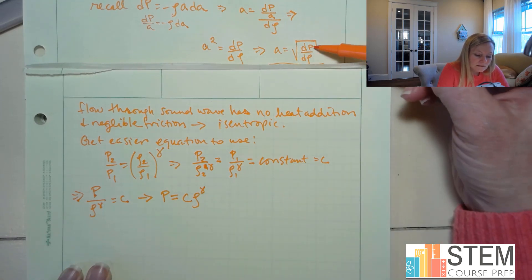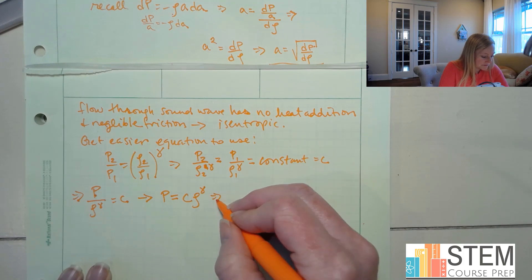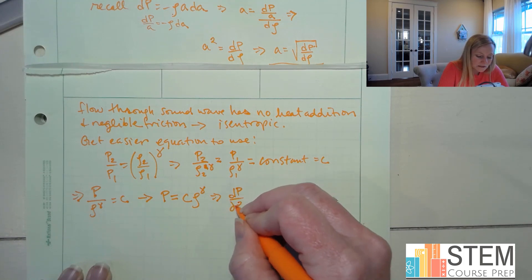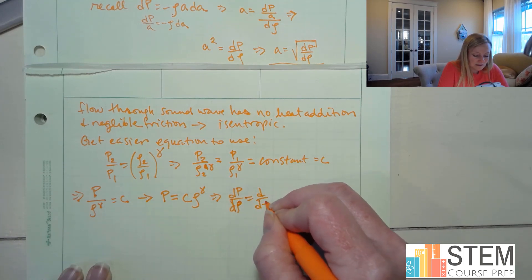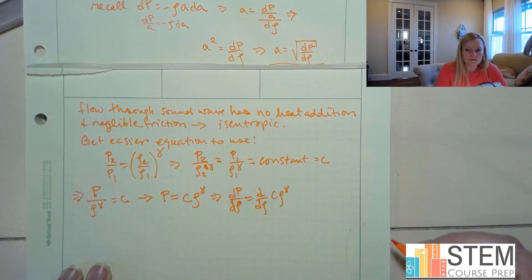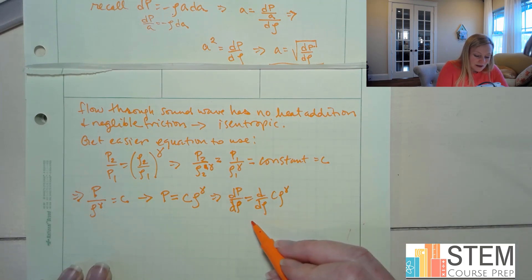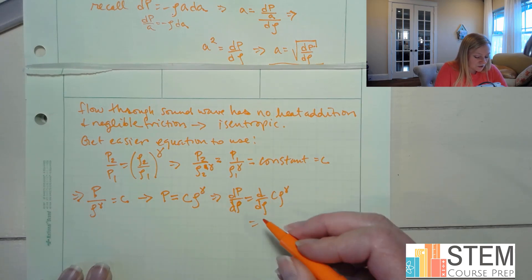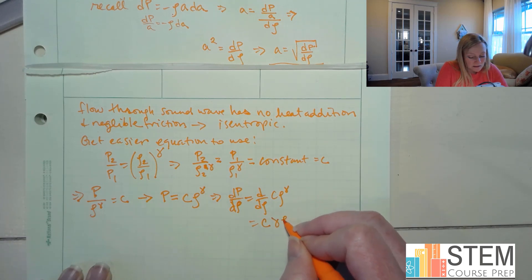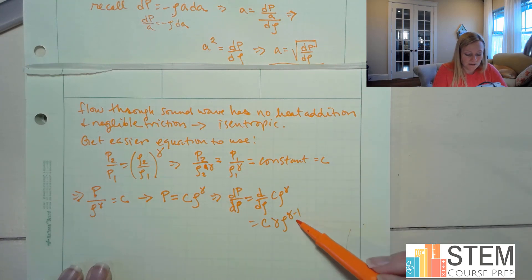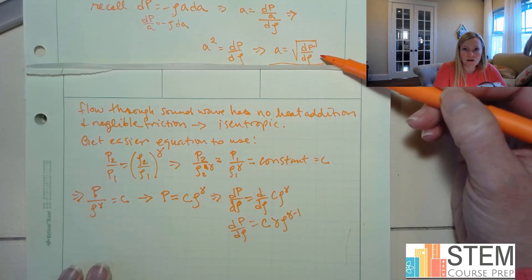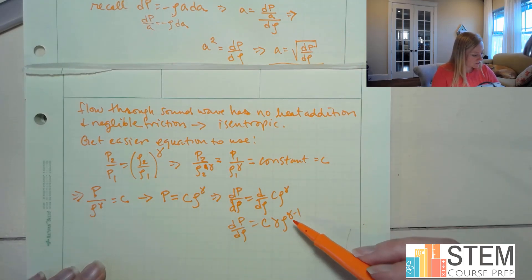Since I want dP and d_rho, I'll take the derivative of both sides with respect to rho. So dP/d_rho = d/d_rho (C * rho^gamma) = C * gamma * rho^(gamma-1). And this is exactly the fraction dP/d_rho that we need.